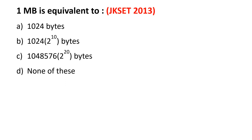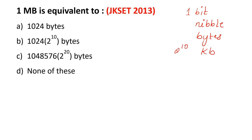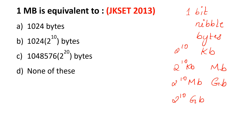First question: 1 MB is equal to how many bytes? This question is very important because in the ICT unit of set or net exams, you have memory-related questions. The smallest unit of memory is a bit. After 4 bits, we get 1 nibble. 8 bits is 1 byte. 2 to the power of 10 bytes is 1 kilobyte. 2 to the power of 10 kilobytes is 1 megabyte. 2 to the power of 10 megabytes is 1 gigabyte, and 2 to the power of 10 gigabytes is 1 terabyte.